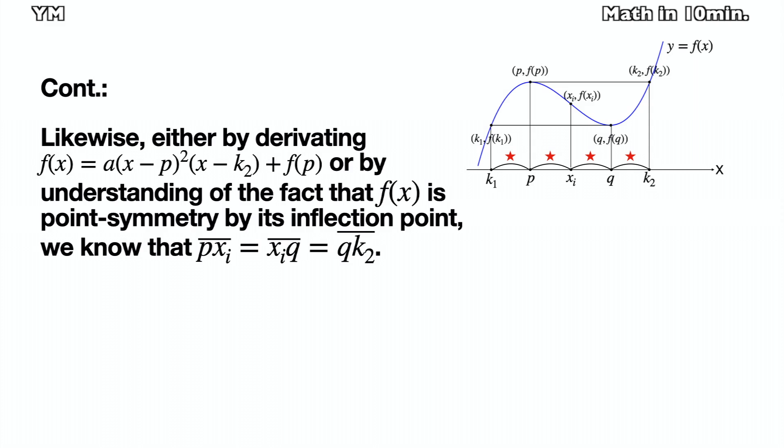Likewise, either by derivating the other form, or by understanding that f is point symmetry by its inflection point, we can find that the line pxi, line xiq, and the line qk2 are equal. So, all four lengths are equal.